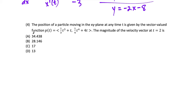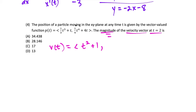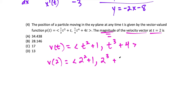Question 4: we have a vector-valued position function p of t and want the magnitude of the velocity vector at t equals 2. The velocity function is the derivative of position. Using the power rule, the x component of velocity is t squared plus 1, and the y component is t to the third plus 4. At t equals 2, the velocity vector is (4 plus 1, 8 plus 4), which is (5, 12).